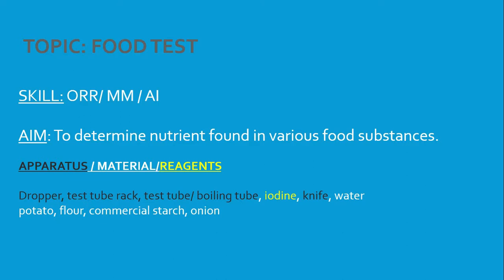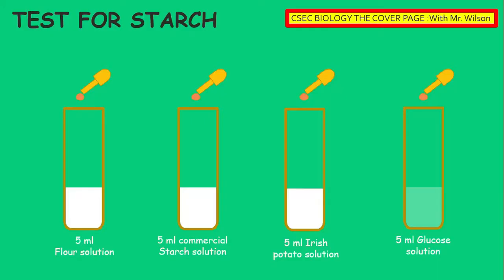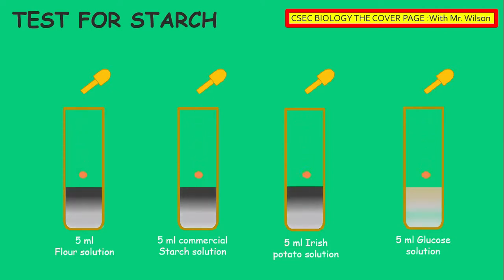Apparatus, material, and reagents — they are color coded below. 3 drops of iodine has been used to a 5 ml sample.